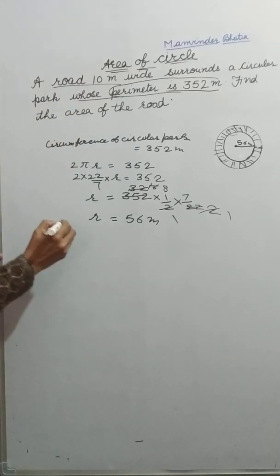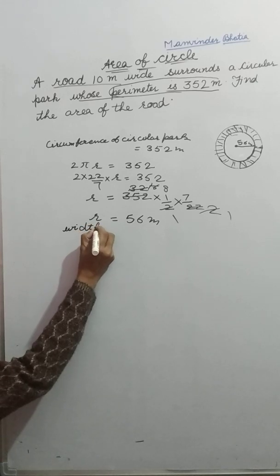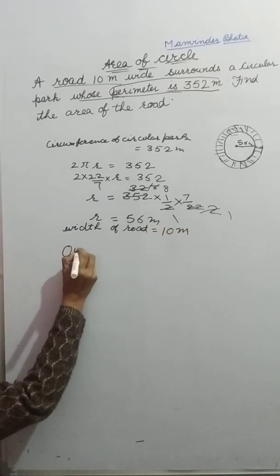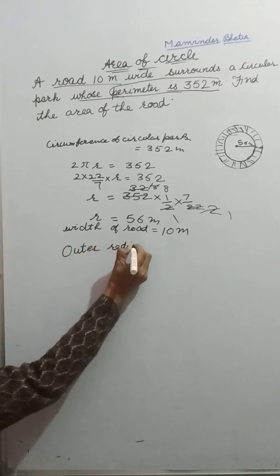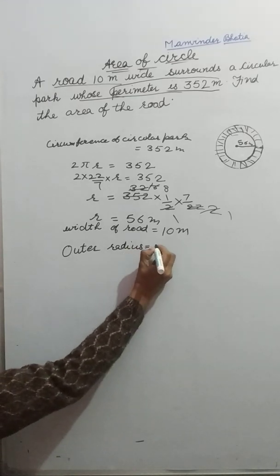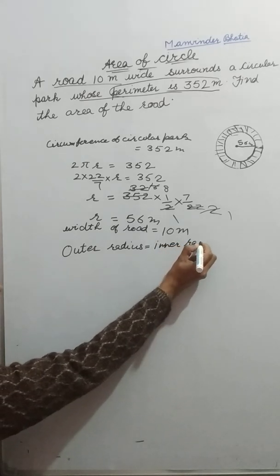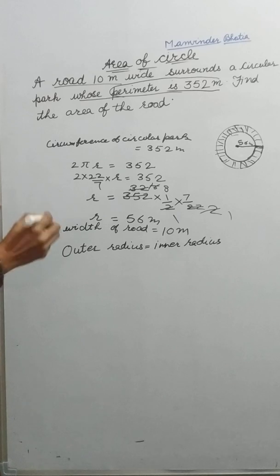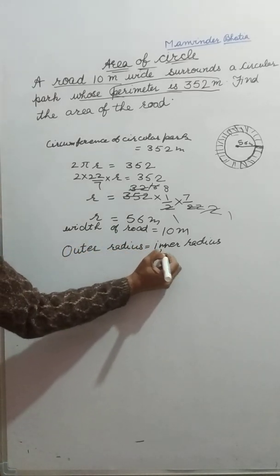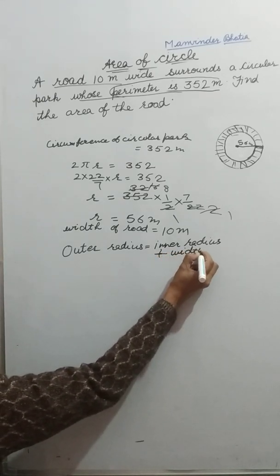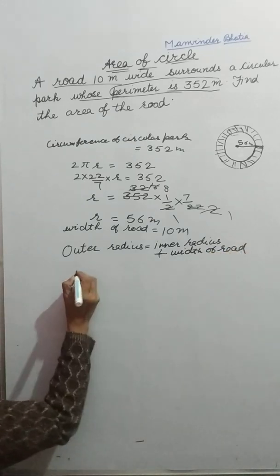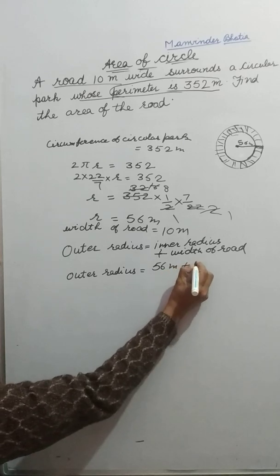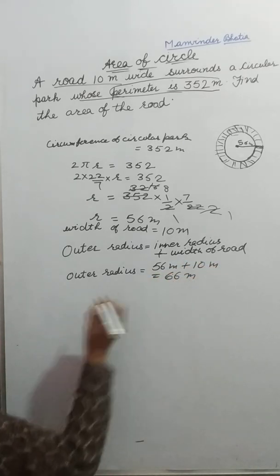Width of the road is given as 10 meter. From here we can get the outer radius. The outer radius equals the inner radius plus the width of the road. So the outer radius is inner radius 56 meter plus 10 meter, which gives us 66 meter. Now the outer radius is 66 meter.